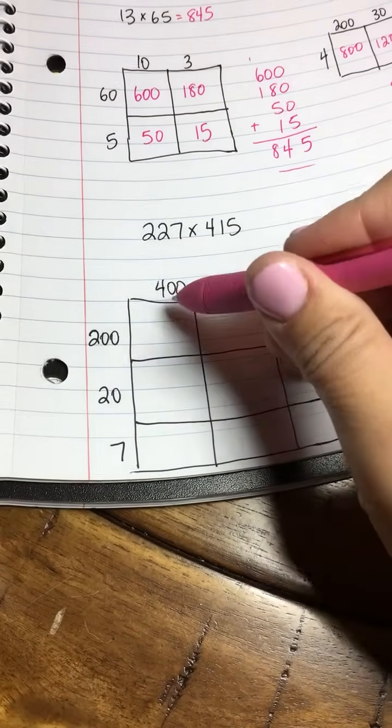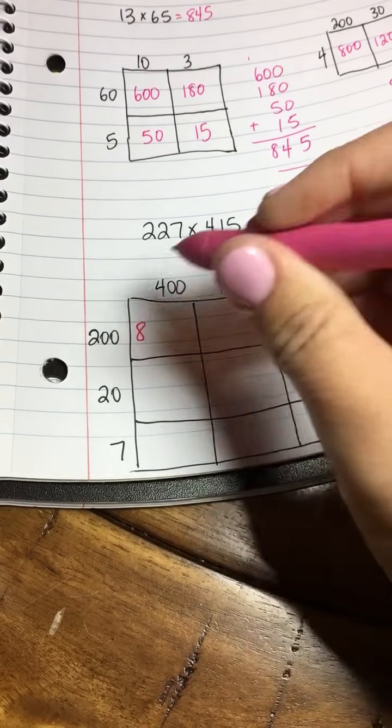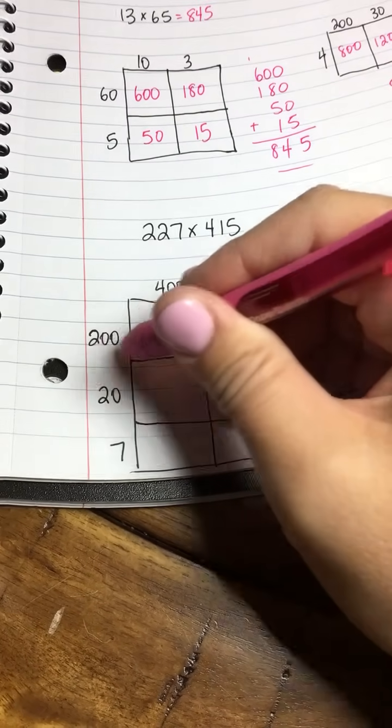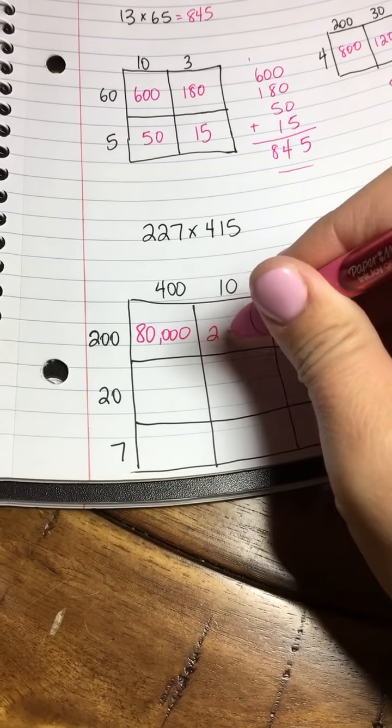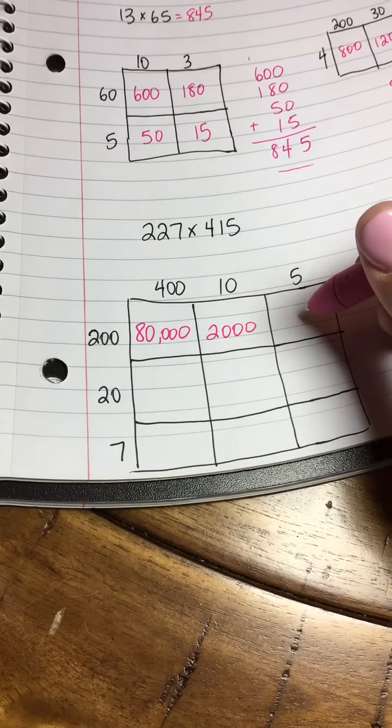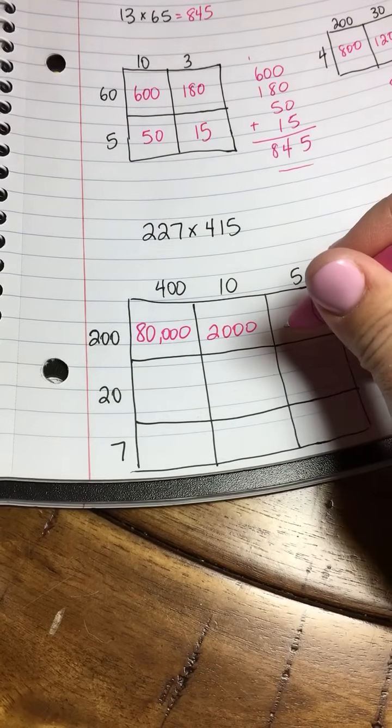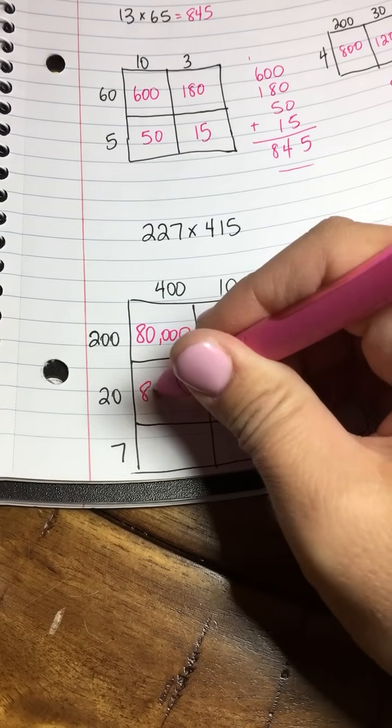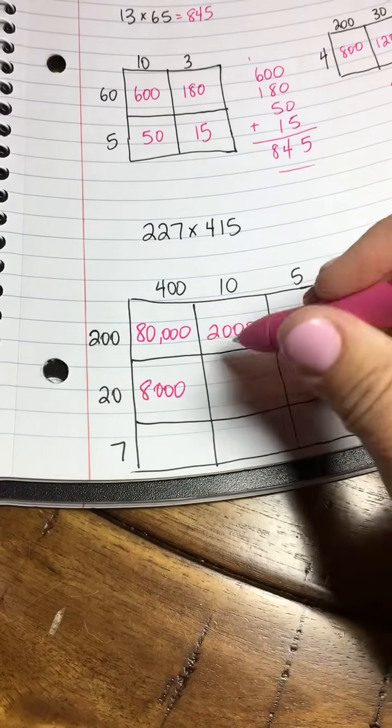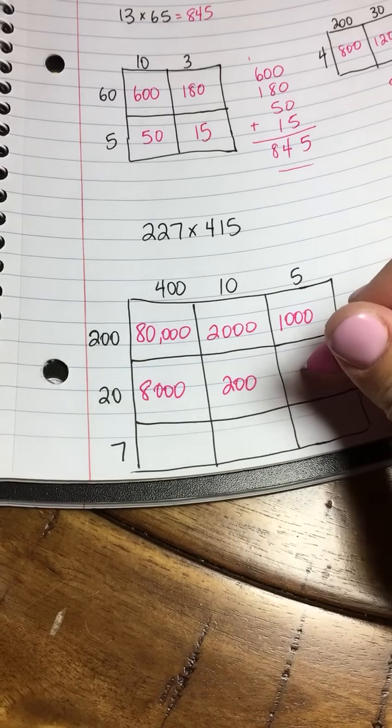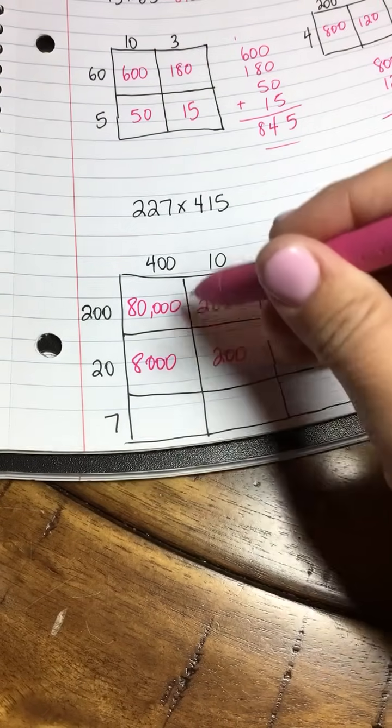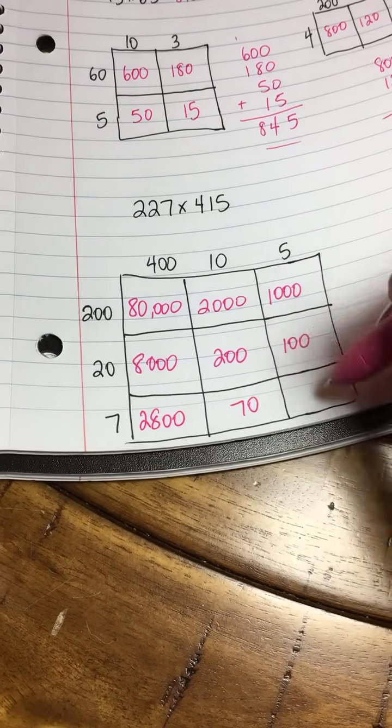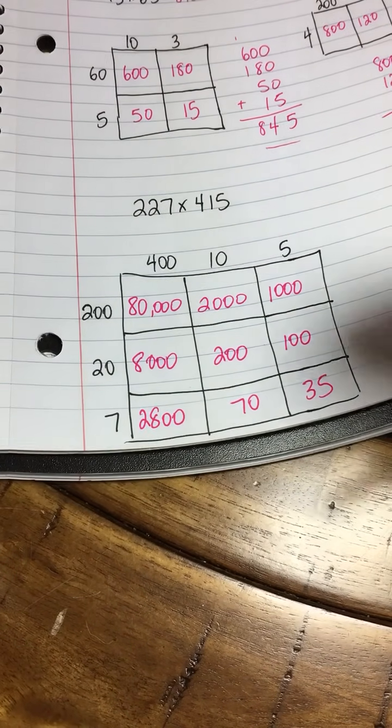Now we'll do our multiplying. In here, 400 times 200 would be 80,000. In this one, we have 200 times 10, so that'll be 2,000. In this one, we have 200 times 5, so that will be 1,000. In this one, we have 400 times 20—that's 8,000. Here we have 20 times 10, which is 200. 20 times 5 is 100. 7 times 400 would be 2,800. 10 times 7 is 70, and 7 times 5 is 35.